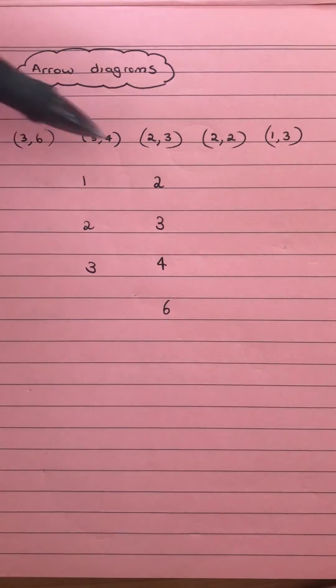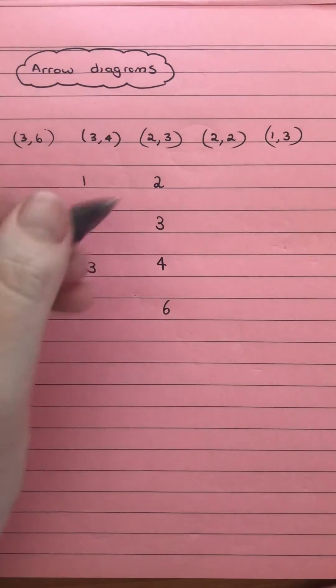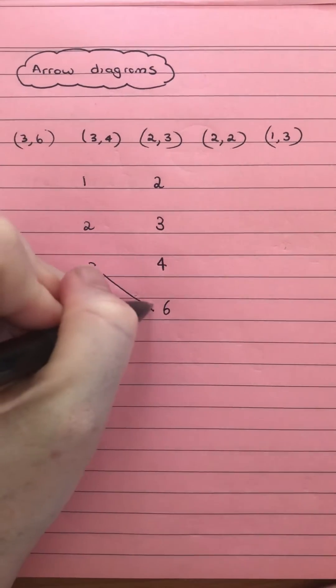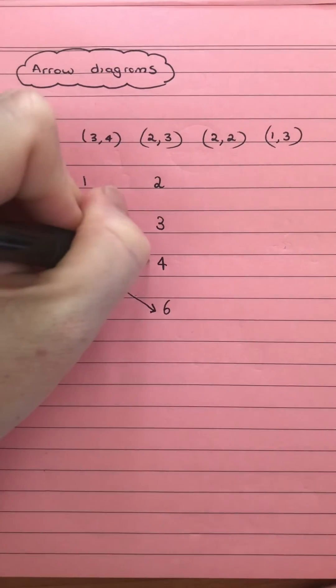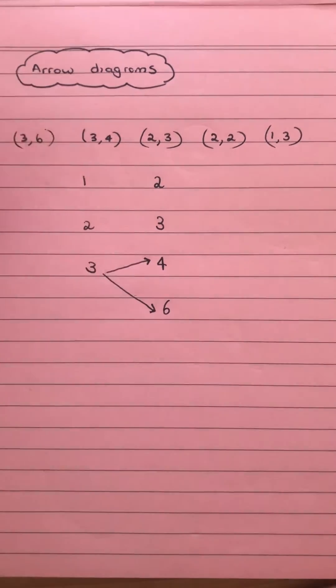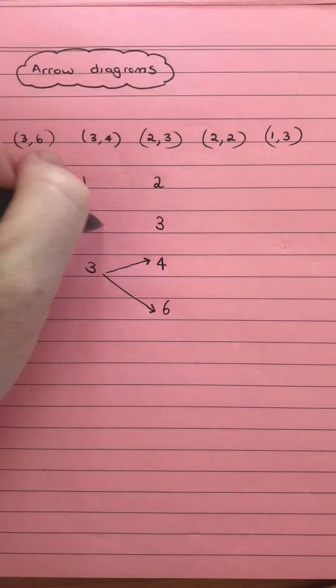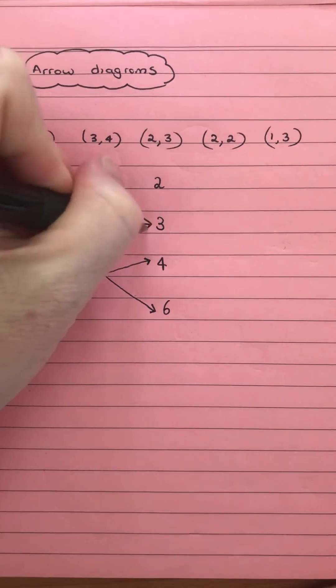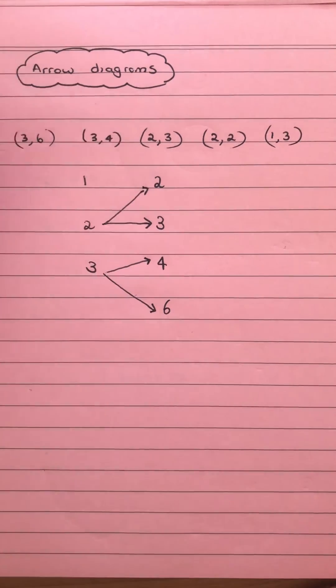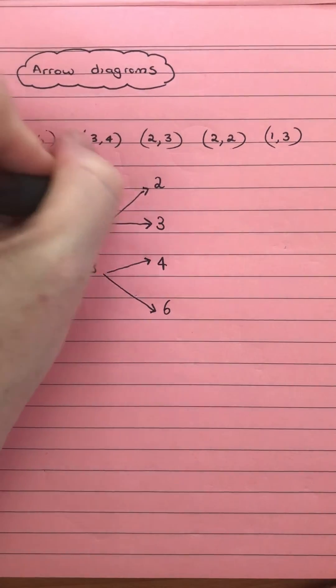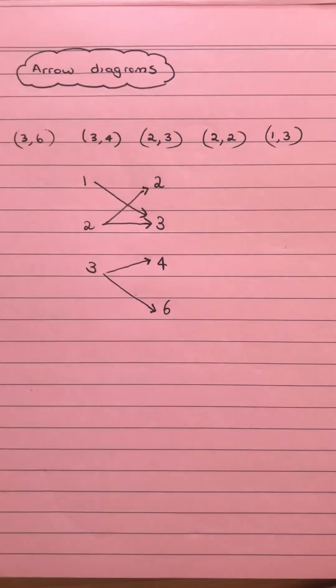And then we're just joining those. So the 3 gets joined to 6. The 3 also gets joined to 4. The 2 gets joined to 3. The 2 also gets joined to 2. And the 1 gets joined to 3.